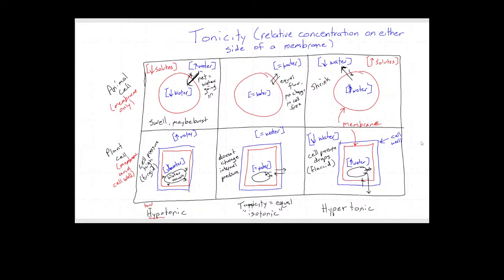That was an extended discussion of hypertonic and hypotonic, but it's worth going over carefully. When you hear 'hypo,' remember that means low solutes outside — and since water is the solvent, if solutes are low outside the cell, water is high outside. You have to think about the water concentration when determining net flow, which in the case of water is called osmosis. This has been Life in Biology — like and subscribe, or not.